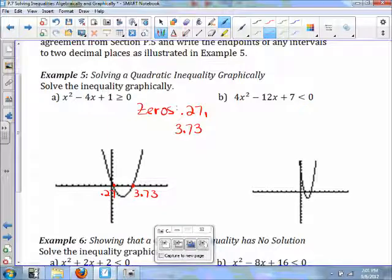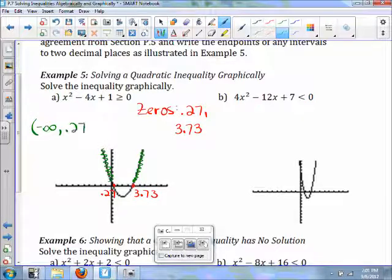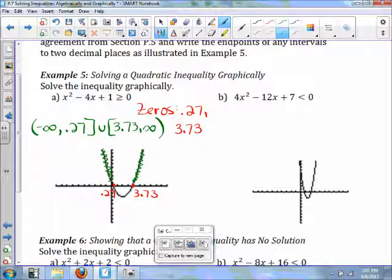Now it says greater than or equal to zero. Well, greater than zero is above the x-axis and we're going to include these. So my answer, negative infinity to 0.27 in union with 3.73 to infinity.